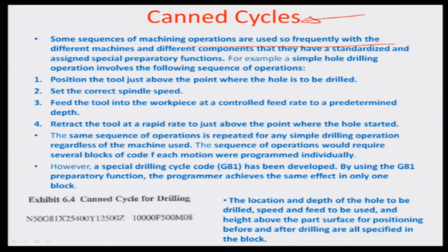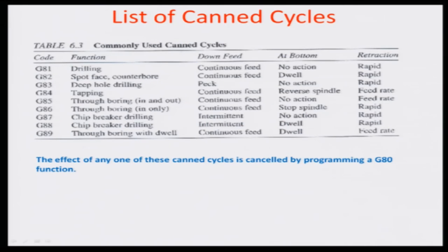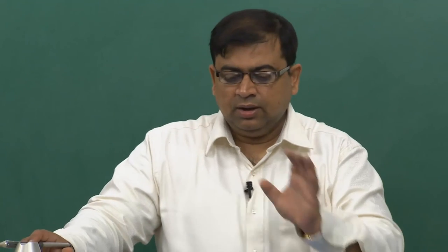Some sequences of machining operations are used very frequently and are standardized as special preparatory functions. These canned cycles are represented by certain G-codes: drilling is G81, G82 is spot face/counter bore, G83 is deep hole drilling, G84 is tapping, G85 is through boring in and out, through boring in only, and G86 is chip breaker drilling. Every time you invoke G81 you only need to specify some aspects of drilling in that single line. This abridges the whole drilling from a three-step process into a single step process - that is what a canned cycle does.